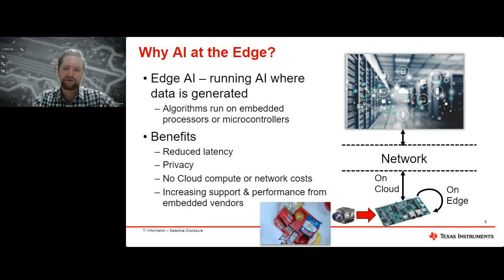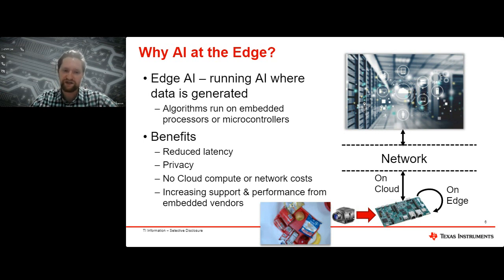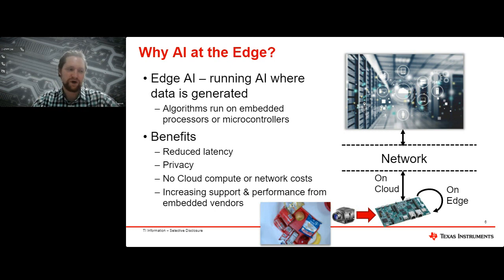Running locally at the edge means running applications on embedded processors or microcontrollers instead of on nearly infinite cloud compute servers. This has several benefits. In time-critical or safety-critical applications, it offers reduced latency — we don't have to worry about the network being slow or going down. For surveillance applications, privacy is important, keeping data on the device where it's collected. There are also no cloud compute or network costs. And we're seeing a lot of support from embedded vendors making it possible to run very large models quickly at the edge — AI models running at 60 frames per second.